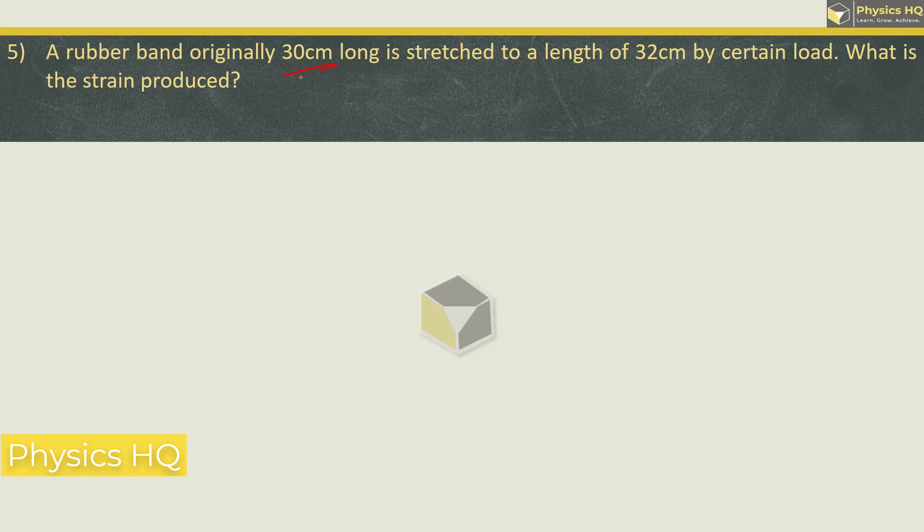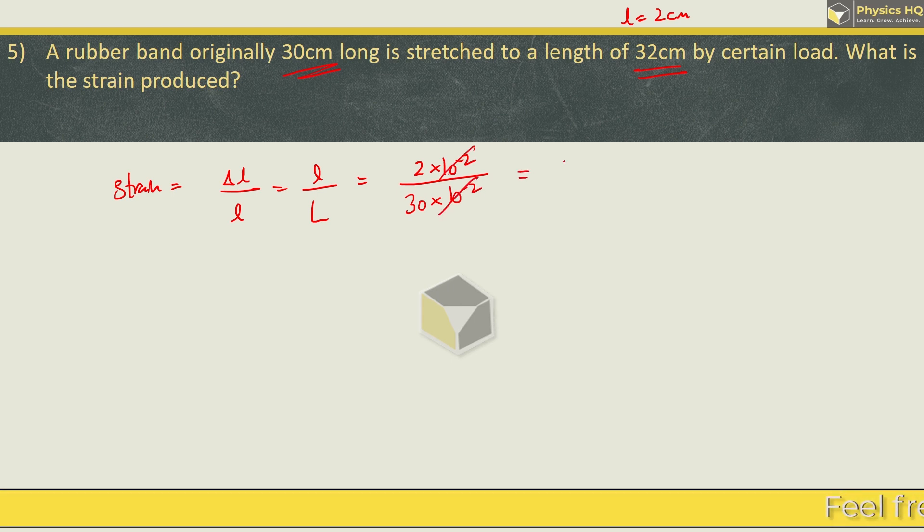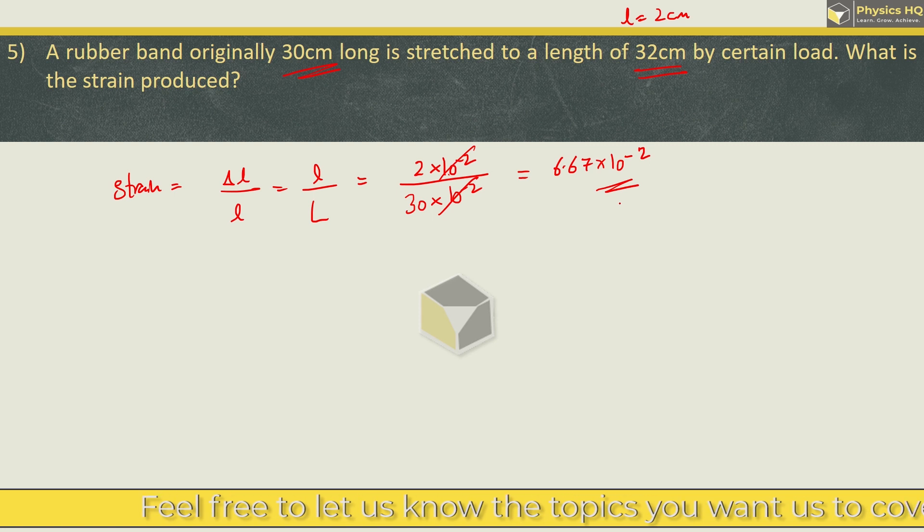A rubber band originally 30 cm long is stretched to a length of 32, so increase 2 cm by a certain load. What is the strain produced? So strain is nothing but the change in length upon original length, ΔL/L. So small l here, 2 cm, 2 × 10^-2 meter. And capital L here, actual length is 30 cm, 10^-2. So this cancels. So 2/30 when you calculate, you get 6.667 × 10^-2. Let us check out the next sum.